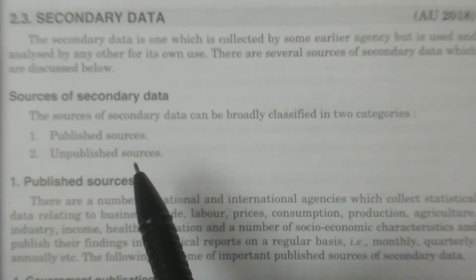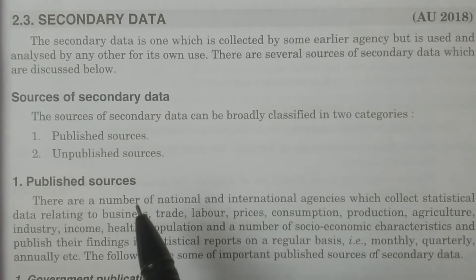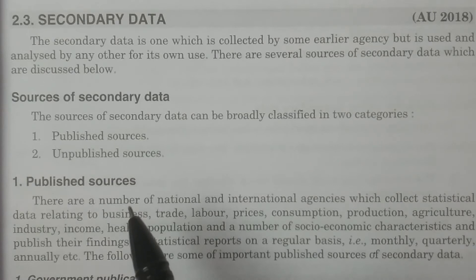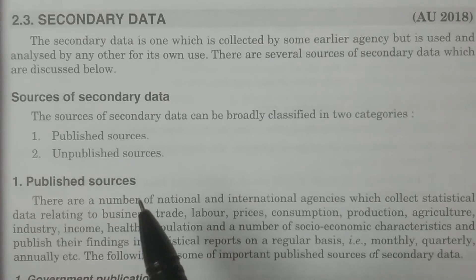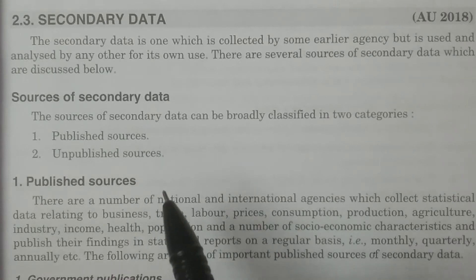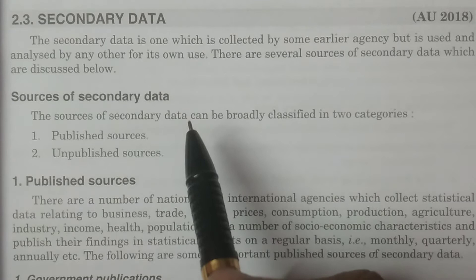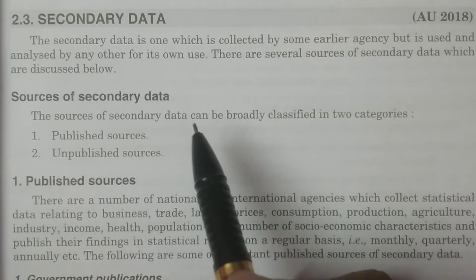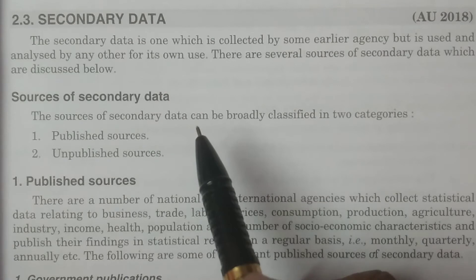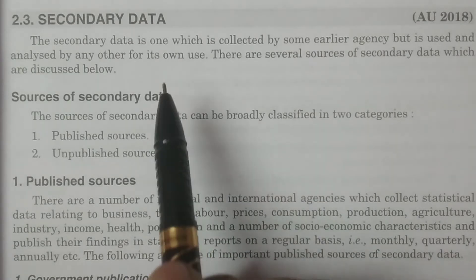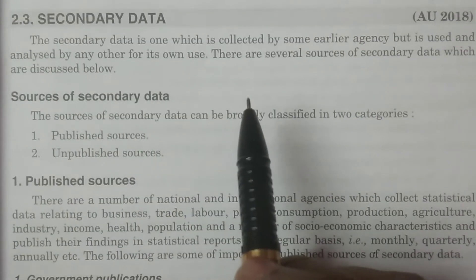That is the difference between primary data and secondary data. Primary data is the data collected originally for the first time. Secondary data is nothing but whatever collected data — that primary data which was kept in a particular record — and some other agency or individual uses that data for their own purpose. Such data is known as secondary data.